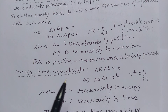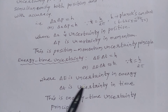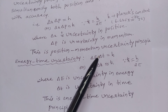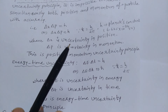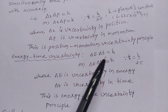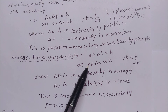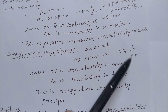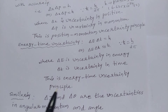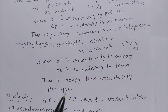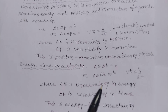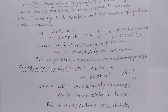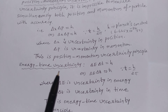Energy-Time Uncertainty: the uncertainty in energy multiplied by the uncertainty in time — the product of these two variables gives a certain limit that must equal Planck's constant. This equation is written as delta E into delta t equals h-cross, where h-cross is equal to h by 2 pi. This is the Energy-Time Uncertainty Principle. It is impossible to measure both energy and time of a particle with accuracy simultaneously.